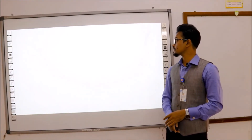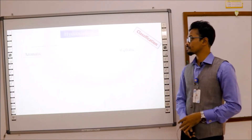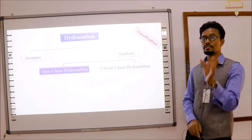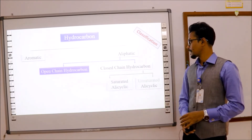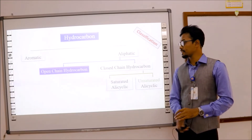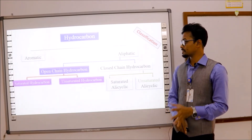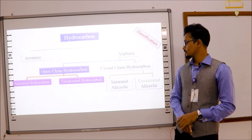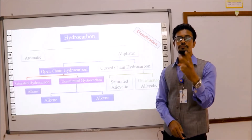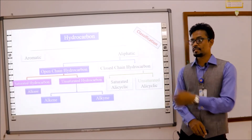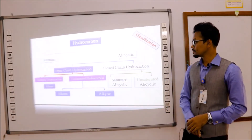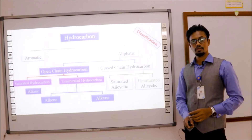Now let's start with hydrocarbons and their various classifications. There are mainly two types: aromatic and aliphatic. Aliphatic hydrocarbons are again of two types: open chain and closed chain. Closed chain hydrocarbons are of two types: saturated and unsaturated. Saturated hydrocarbon is also called alkane. Unsaturated hydrocarbons are of two types: alkene and alkyne. Please take a picture or take a snapshot — you may write down from here.